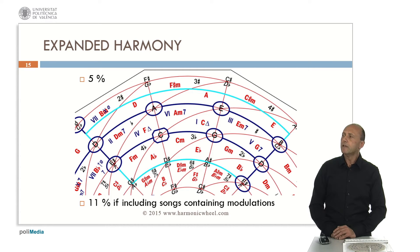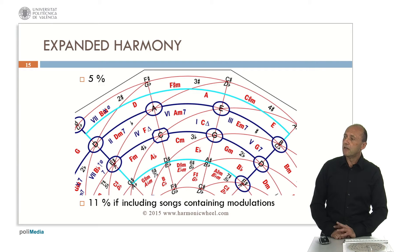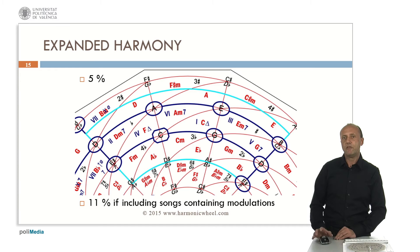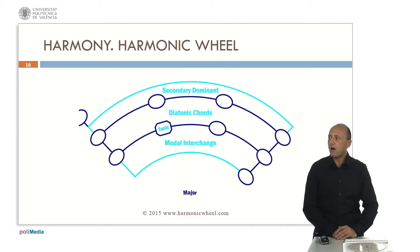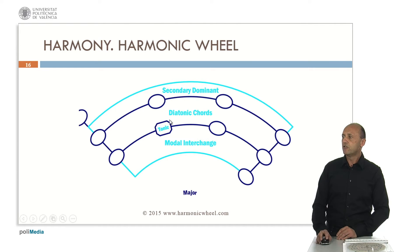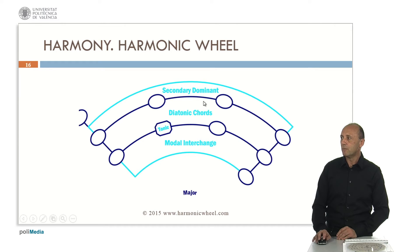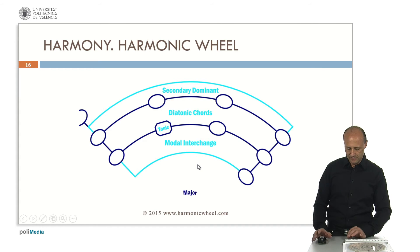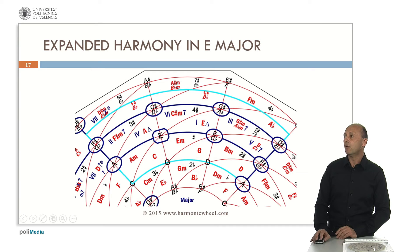We call expanded harmony the set of diatonic chords, secondary dominant and modal interchange chords. Only 5% of the songs contain these three types of harmonies. But this percentage increases up to 11% if we include those songs containing modulations. In this diagram, we can see how the different chords are placed on the harmonic wheel. We choose the tonic with this small rectangle, and then we automatically find the diatonic chords in this big rectangle. Just above them, we find the secondary dominant chords, and just below it, the modal interchange chords. So if we are in E major, we can easily find all the diatonic, secondary dominant, and modal interchange chords.